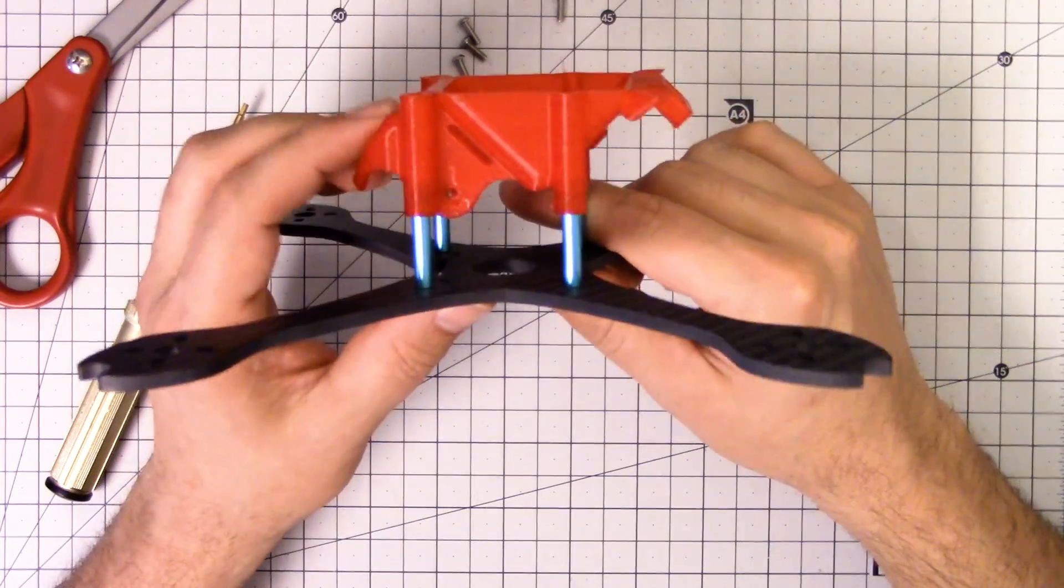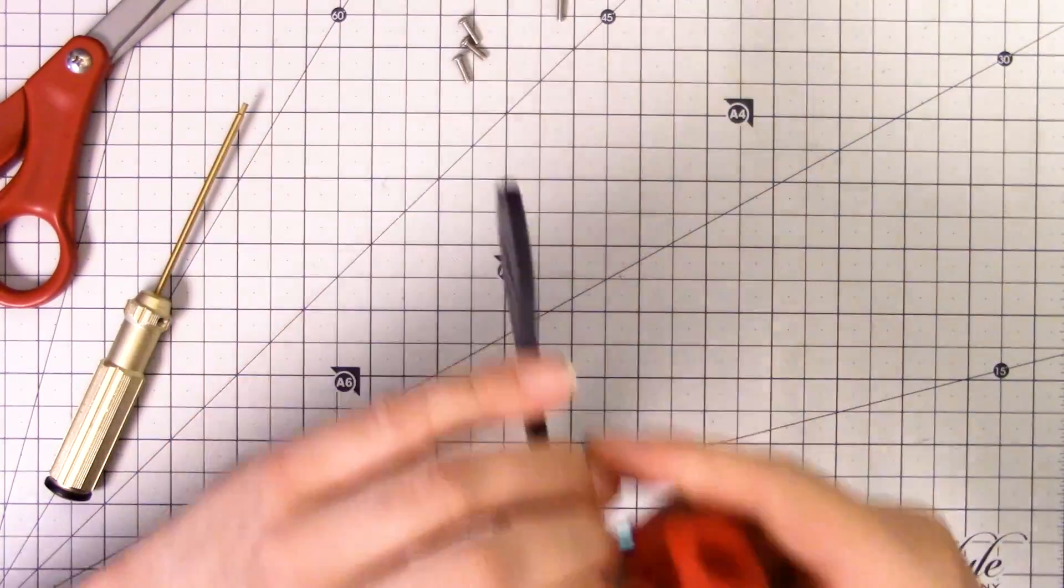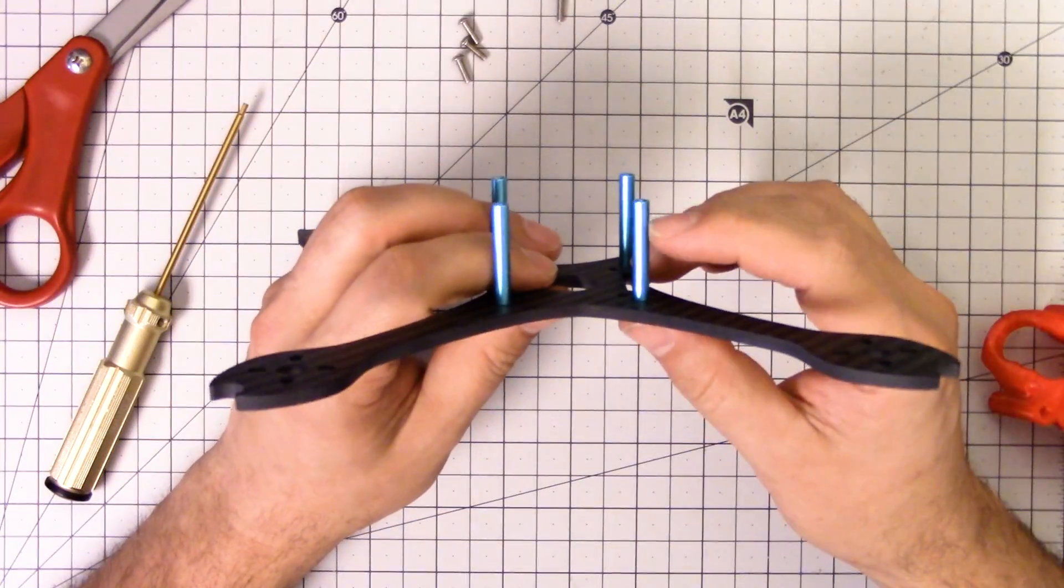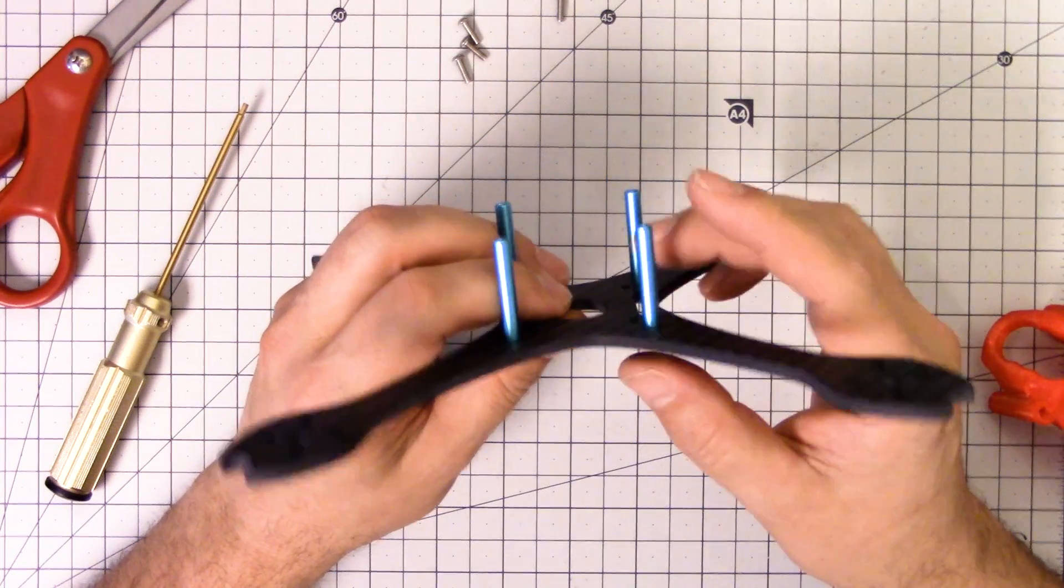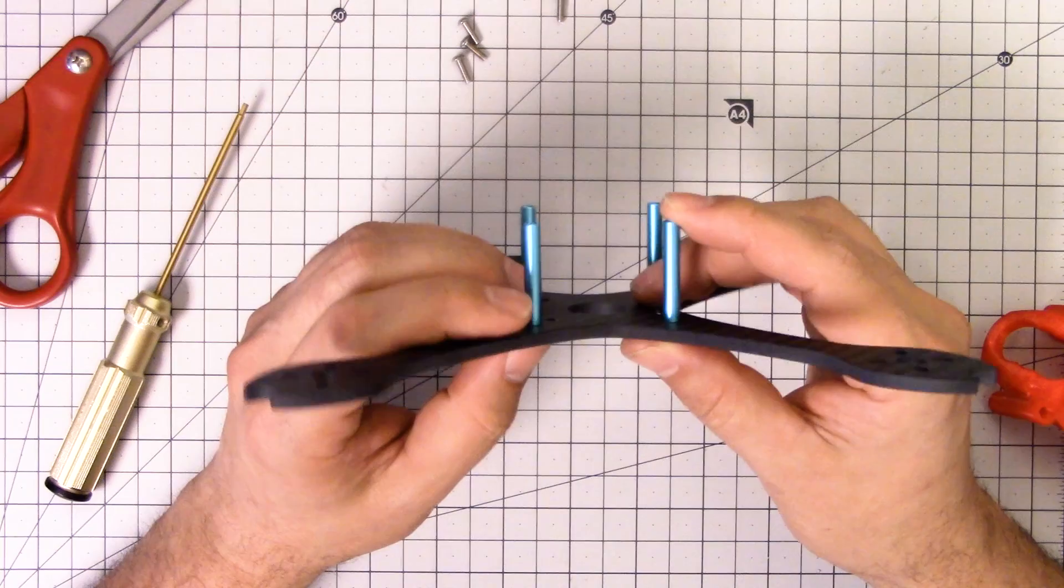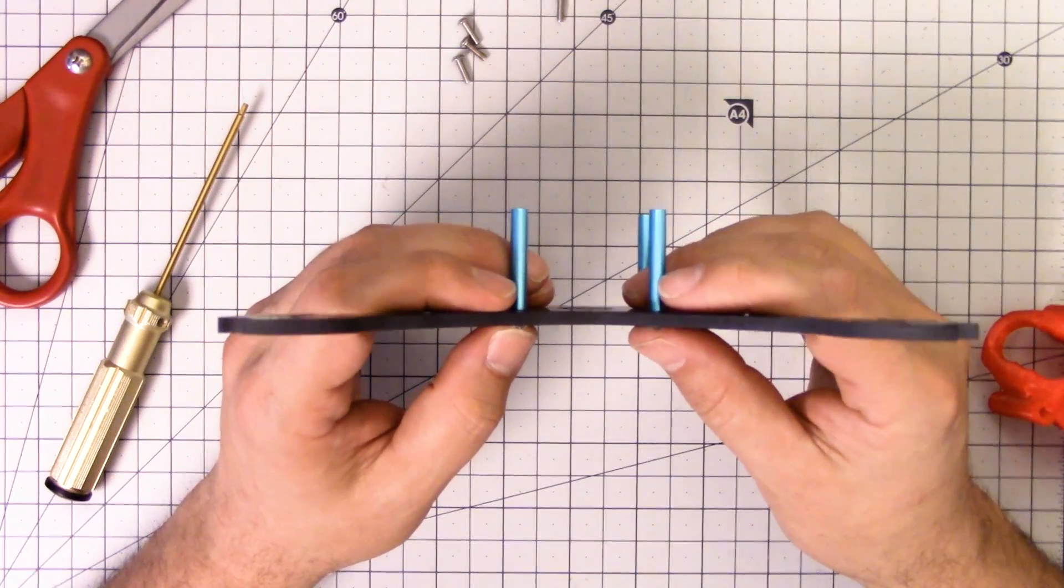Some people have suggested that if you put longer screws through that it fixes that, but I don't really see how that's going to be the case. It's not that the standoff is bending, it's that the screw itself is bending. We'll see if that bears out, just something I heard.